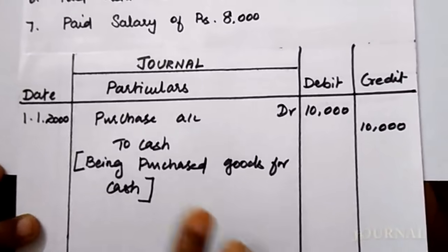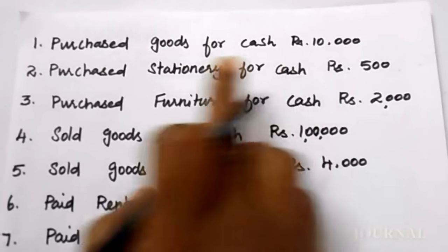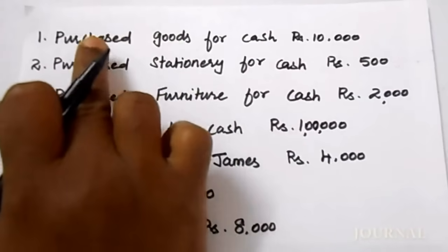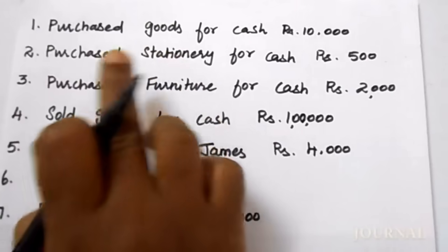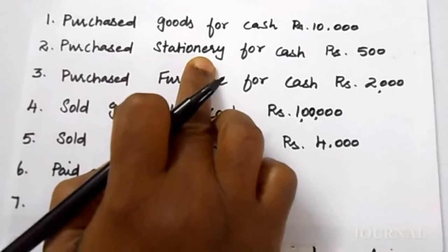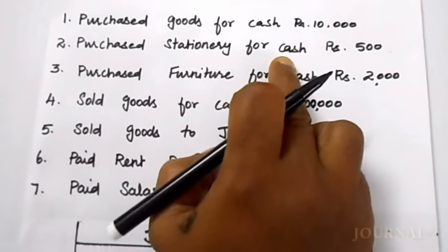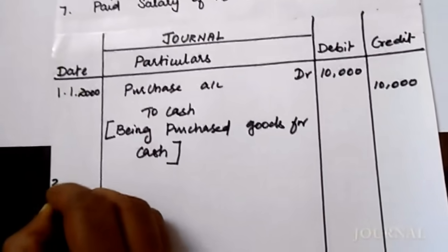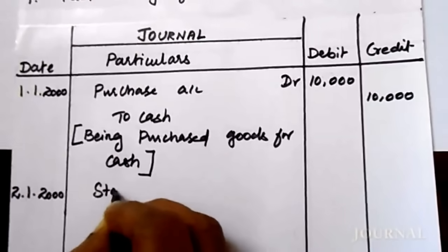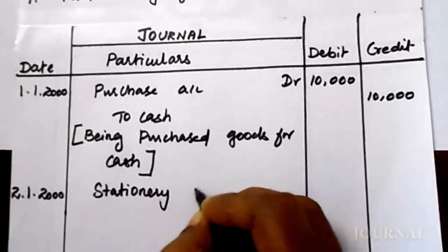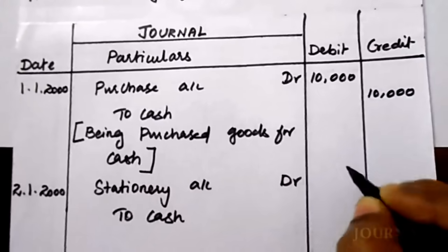The second transaction is purchase stationery for cash. In the previous entry they just mentioned 'purchase goods,' but in this transaction they clearly mention purchase stationery. When you purchase stationery, stationery comes in and cash goes out. On 2nd January 2000 — stationery account debit to cash, 500 rupees. Narration: being purchase stationery for cash.